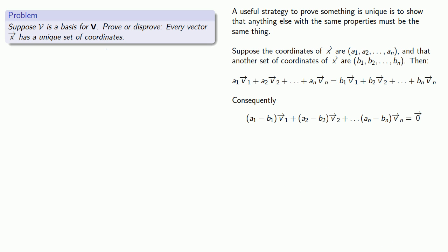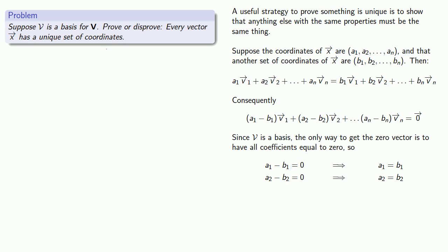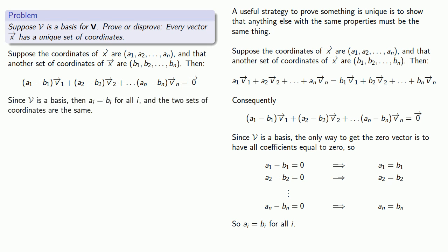At this point we have a linear combination equal to zero. Ask yourself: what do we know? We know that v forms a basis, which means these vectors are independent. That means the only way to get a linear combination equal to zero is if all coefficients are zero. So a1 minus b1 equals zero, meaning a1 and b1 are the same. Likewise a2 minus b2 equals zero, so a2 equals b2, and so on. Thus ai equals bi for all i, meaning the two sets of coordinates are in fact the same.